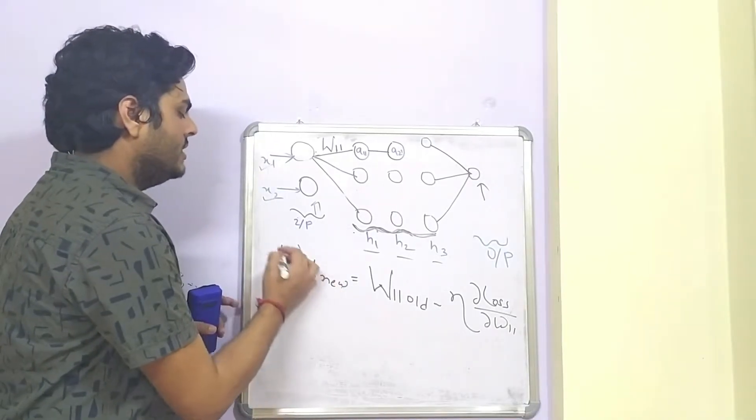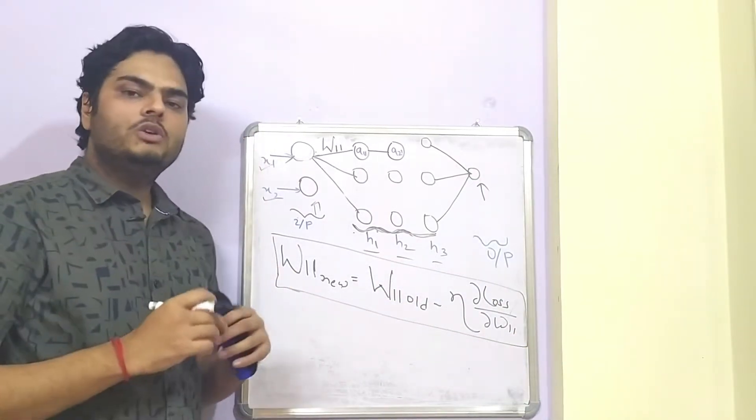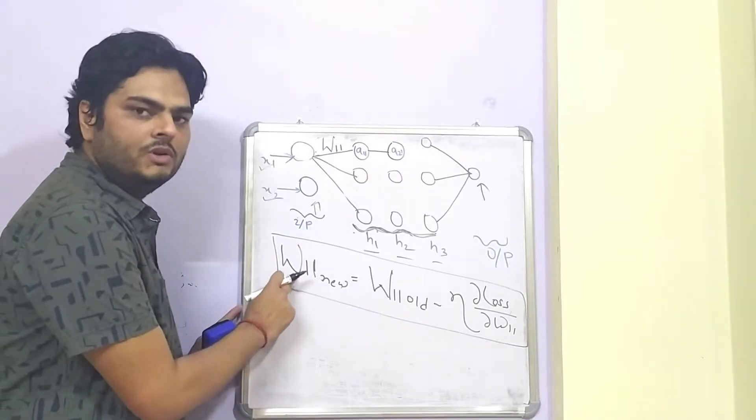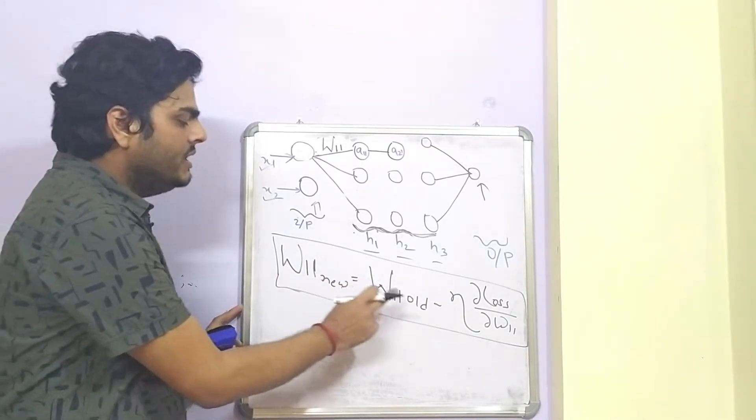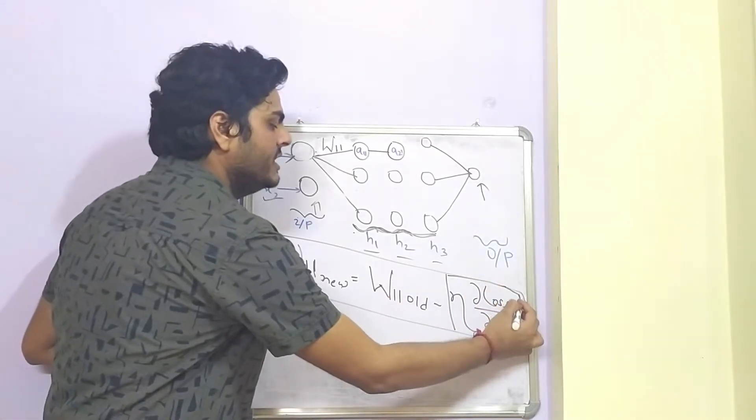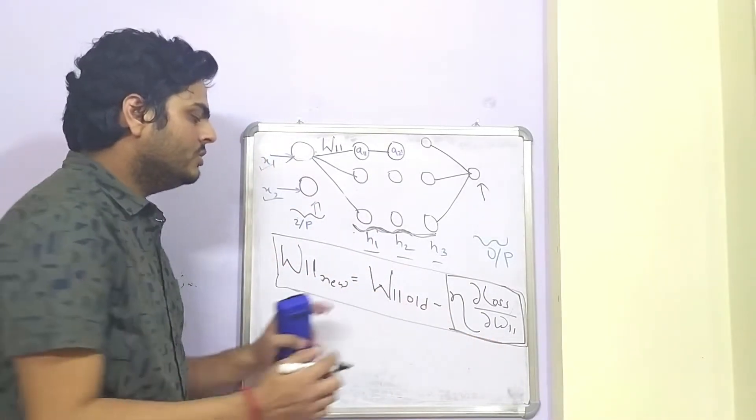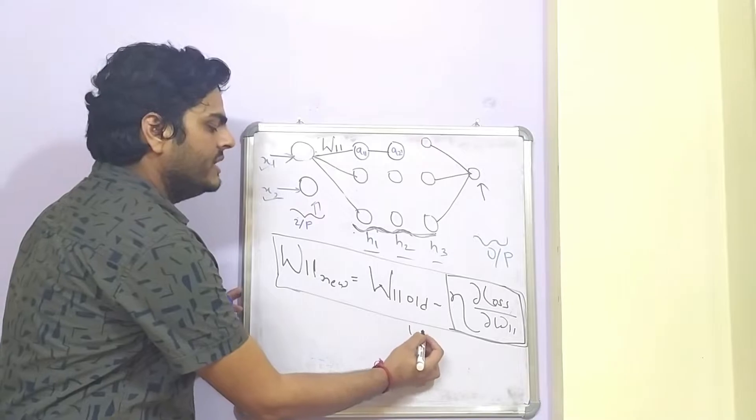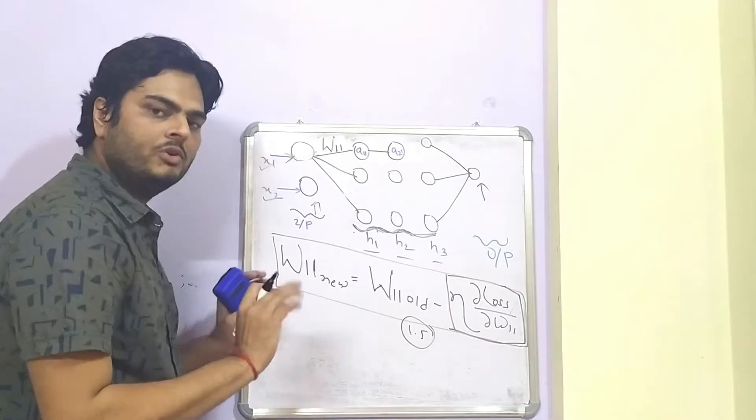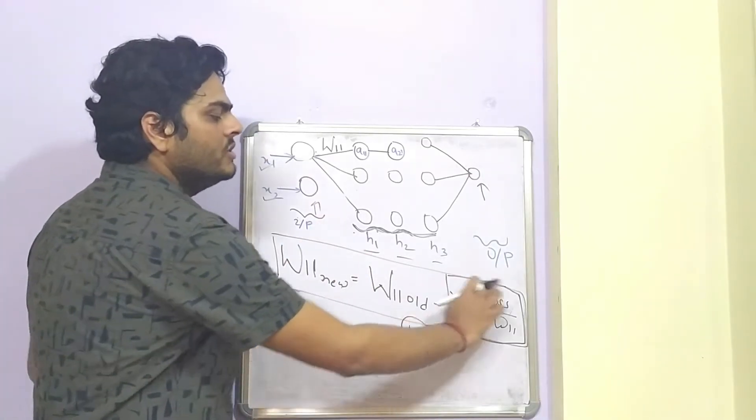Now with this formula, all the weight updation happens in neural network. So if you see this carefully, the new weight W11 new will vary from W11 old based on this particular input in the equation. So if W11 old is let's say 1.5, then from this 1.5, how much shift will happen either forward shift or backward shift will depend on what is the output of this term here.